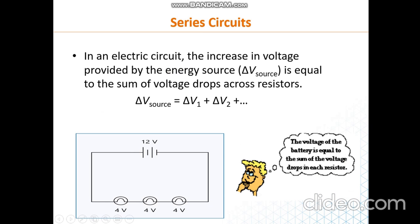What is interesting is that the voltage provided by the energy source or the battery gets divided between the devices in a series circuit. In this example, I have three identical lamps or light bulbs connected in series. The 12 volts gets divided equally between the three identical lamps, so the voltage across each one is only 4 volts.